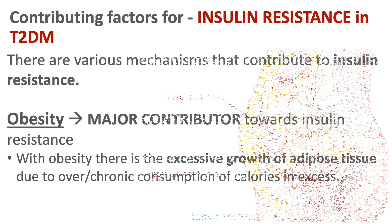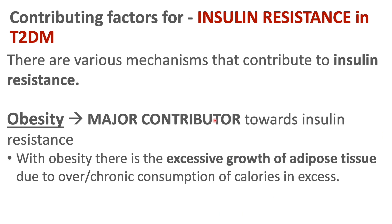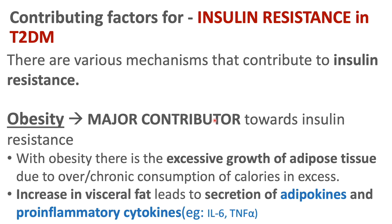This leads to an increase of fat tissue. As we can see here, there is subcutaneous fat and also visceral fat. The visceral fat is the fat that wraps around organs within the abdominal cavity, and this fat is very important. With visceral fat, there is an increase in secretion of inflammatory mediators such as adipokines and pro-inflammatory cytokines such as interleukin-6 and TNF-alpha.